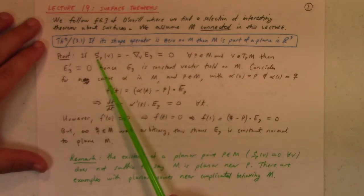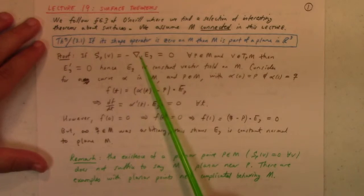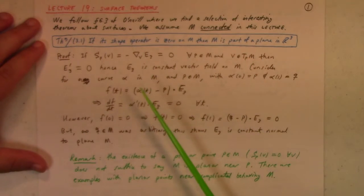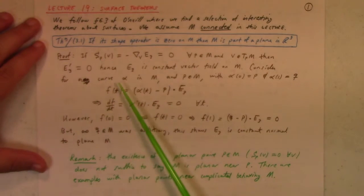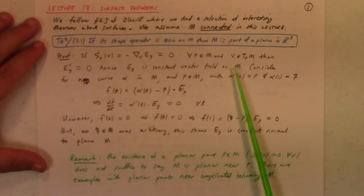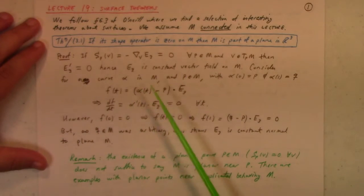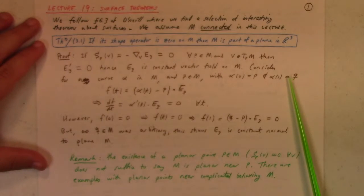More to the point, so the shape operator is zero. That means the covariant derivative of e3 in the v-direction zero at each point, and for all vectors at each point. So then the derivative of e3 is equal to zero along all curves, which goes to show you that e3 is a constant vector field on m. So we can use it and define this function.